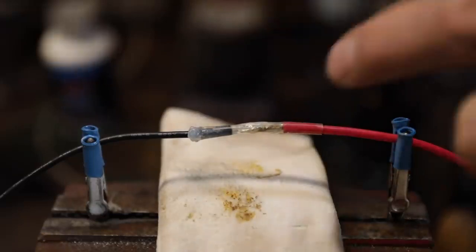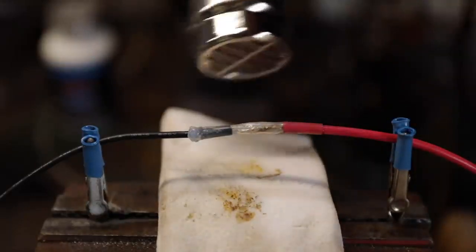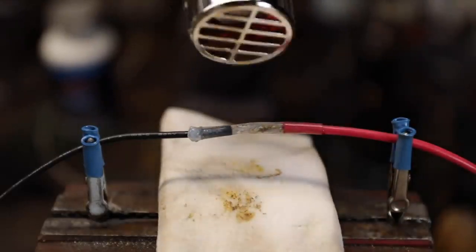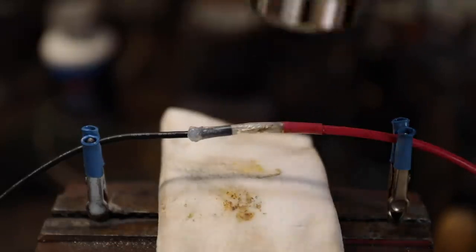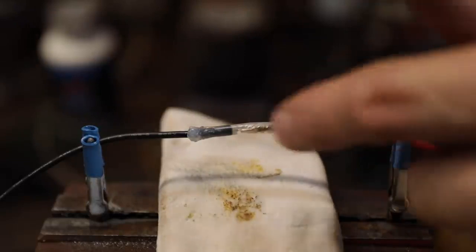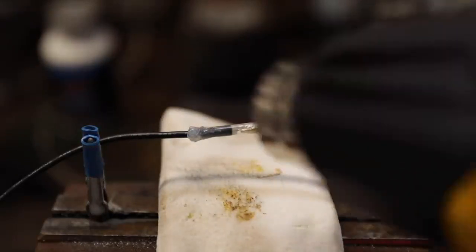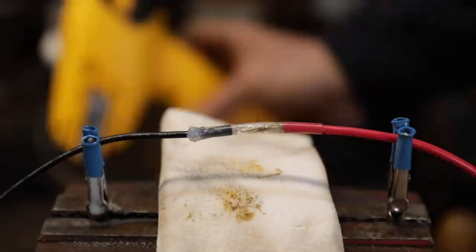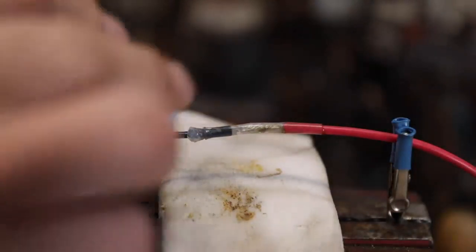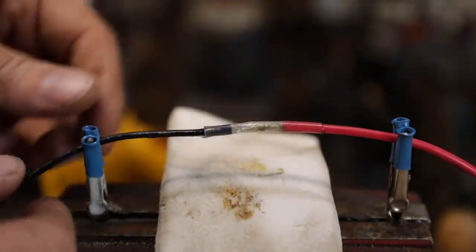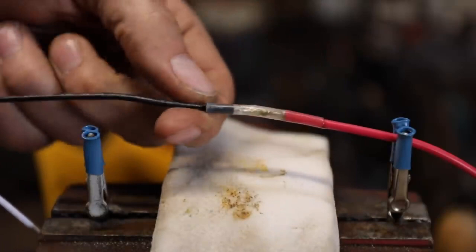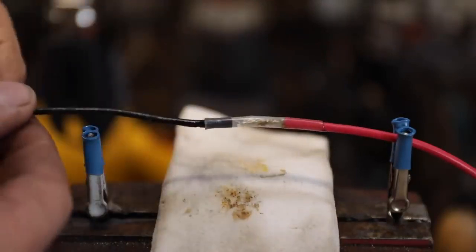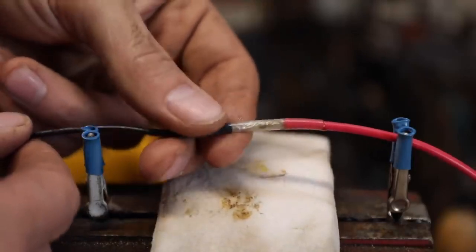You'll see that silicone making that seal as the shrink tape tightens around the connection. Ideally you want it to squeeze out like that side right there. Probably should have put a little bit more on the housing but that looks pretty good right there. Once that's cool to the touch, you can clean that silicone off and you have a really good, as good as you're going to get, waterproof connection for joining two wires together that's probably going to be tougher than the wire itself.